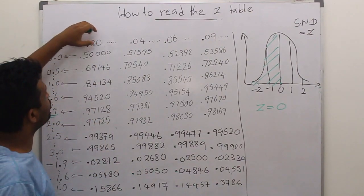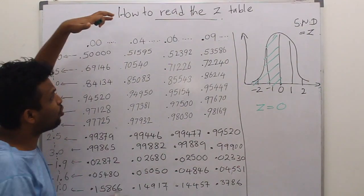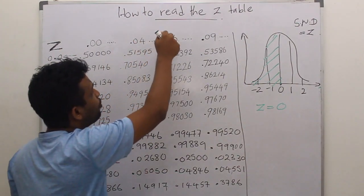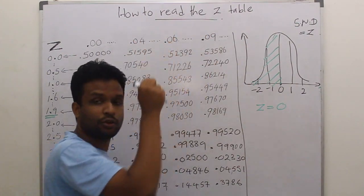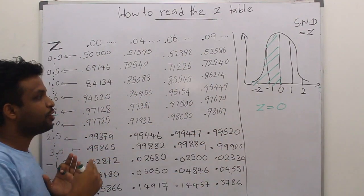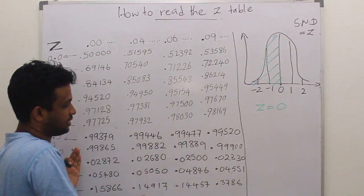In the columns also, we have 0.00, 0.01, 0.02. I have only four columns: 0.00, 0.04, 0.06, and 0.09. And we have the proportions towards left of the certain points in these numbers.